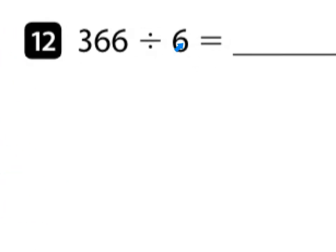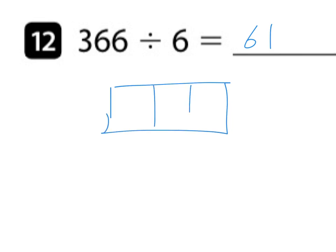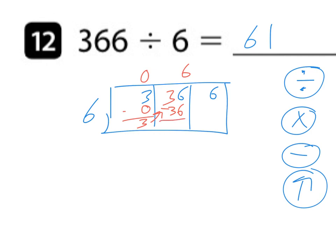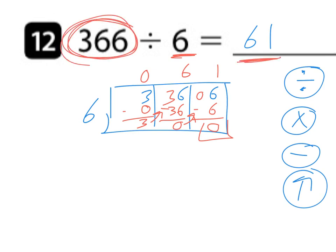Number twelve: 366 divided by 6. 6 goes into 36 six times and 6 goes into 6 one time — quotient is 61. Three boxes, 366, divisor 6. 6 goes into 3 zero times, 0×6=0, subtract, bring up. 6 goes into 36 six times, 6×6=36, subtract, bring up. 6 goes into 6 one time, 1×6=6, subtract — remainder zero. There are 6 groups of 61 to equal 366.